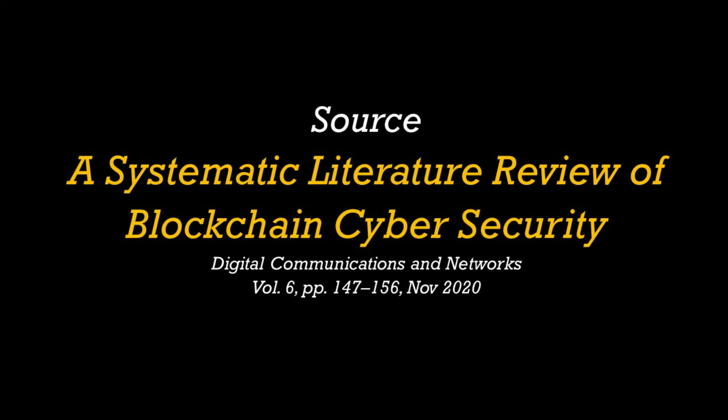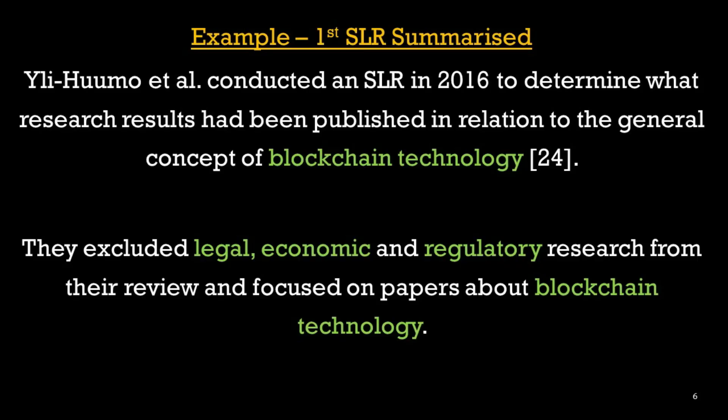Today I'm continuing with the same paper that I used yesterday. This is the first example within this paper where they have summarized one existing literature review. This is a paper written by Lee Humo in 2016. It is a systematic literature review on blockchain and one of the first or earliest SLRs published in this area. So when they summarized this paper in their paper, this is what they have written. Let's begin.